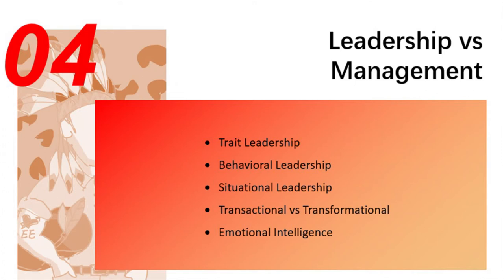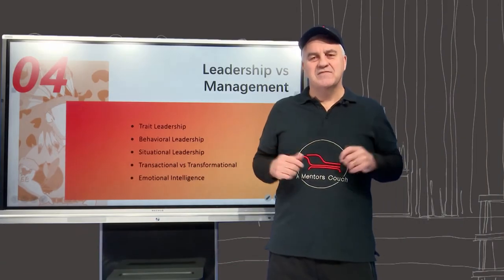The five areas of leadership each have multiple subsets, each proposing a different answer to what makes the perfect leader. Trait theory focuses on identifying personality traits and characteristics linked to successful leadership across a variety of situations. Behavioural leadership looks at the various styles of the leader, while situational leadership stresses the need for a leader to adapt to any given situation using a variety of styles.